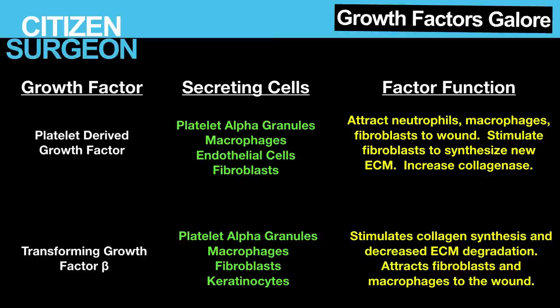Transforming growth factor beta, or TGF-beta, is secreted by platelets, macrophages, fibroblasts, and keratinocytes — you can see a pattern with platelets, fibroblasts, and macrophages being really important throughout wound healing. TGF-beta stimulates collagen synthesis and decreases extracellular matrix degradation. It also attracts fibroblasts and macrophages to the wound — kind of a self-fulfilling prophecy where macrophages and fibroblasts secrete TGF-beta, which attracts more macrophages and fibroblasts. Once neutrophils finish cleaning up the wound, macrophages take over, then fibroblasts start laying down collagen.